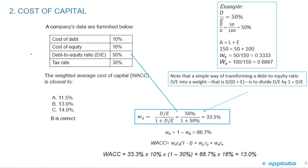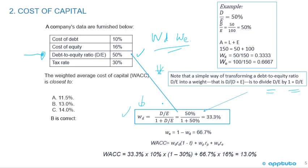This is a little tricky because they give you the debt-to-equity ratio at 50%, but they don't give you the weight of debt or the weight of equity — you have to figure it out. A simple way to transform a debt-to-equity ratio (D/E) into a weight (debt over debt plus equity) is to divide the D/E ratio by 1 plus the D/E. So the weight of debt = 50% divided by 1.5, which gives us a weight of debt of 0.333.